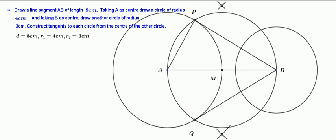Also, join AP and AQ. Here, BP and BQ are tangents from point B to the first circle with center at A.